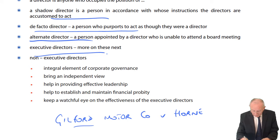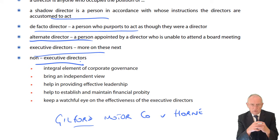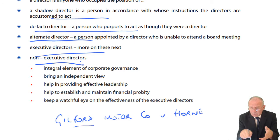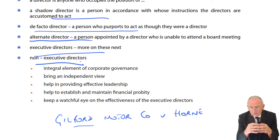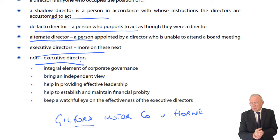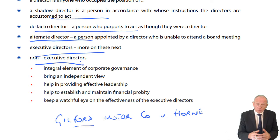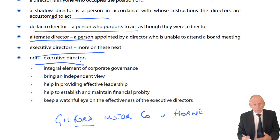Executive directors — more on these in the notes, because these are the ones who run the company. Non-executive directors are a relatively new category. They came about really in 1992, which you may have come across in F8, P1, P7, and P2 — the concept of corporate governance. The corporate governance code was published under government sanction by a man called Cadbury, like the chocolates. As a result of Cadbury's report, non-executive directors were introduced as a concept.